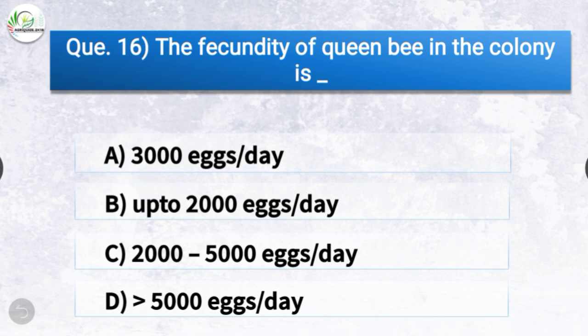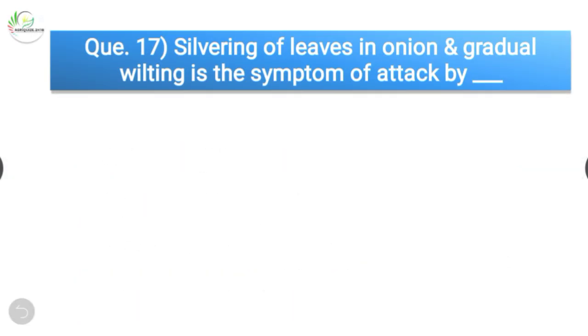Question number sixteen: The fecundity of queen bee in the colony is? The options are 3,000 eggs per day, up to 2,000 eggs per day, 2,000 to 5,000 eggs per day, or more than 5,000 eggs per day. The correct answer is option B, up to 2,000 eggs per day — the fecundity of queen bee in the colony is up to 2,000 eggs per day.